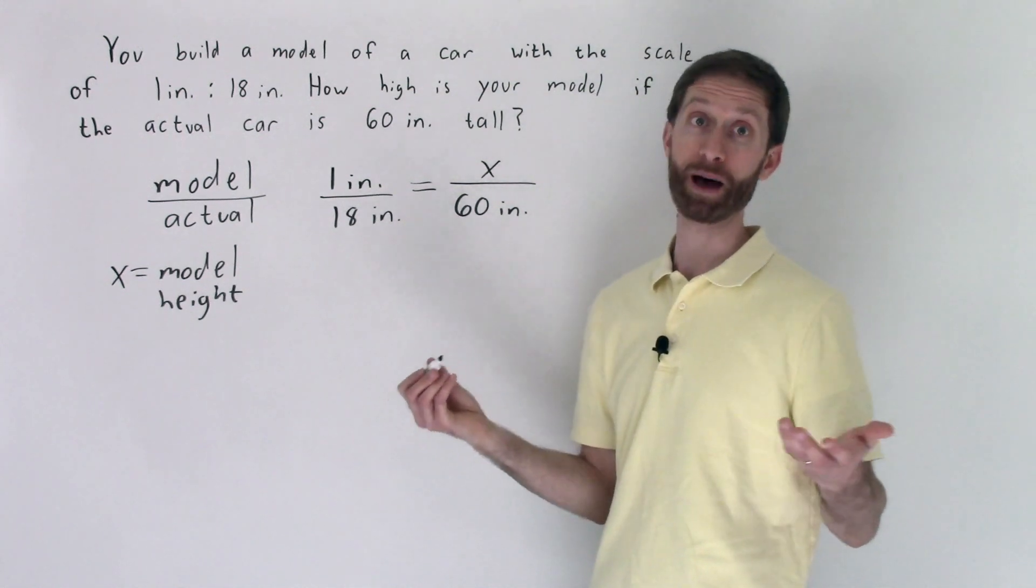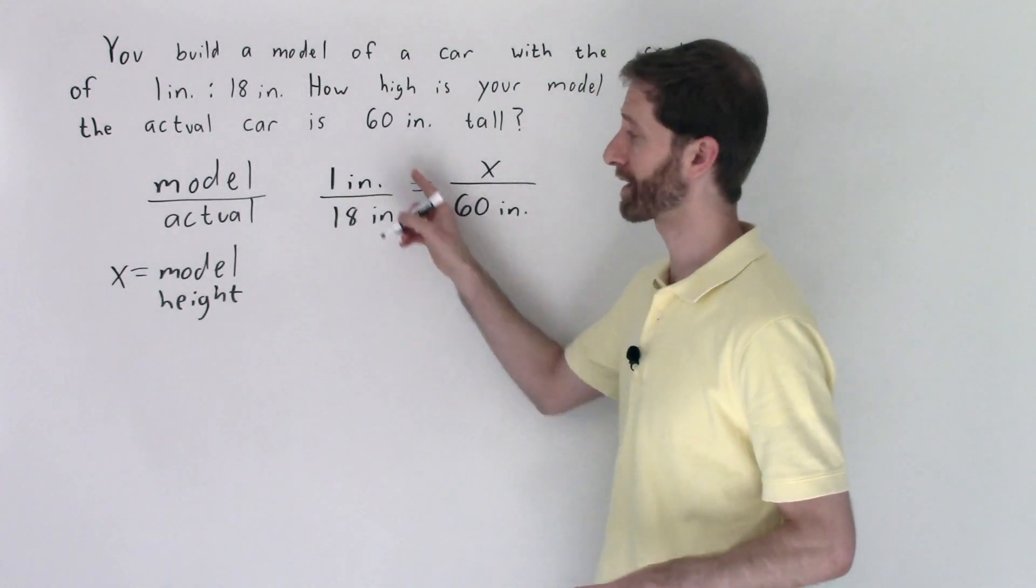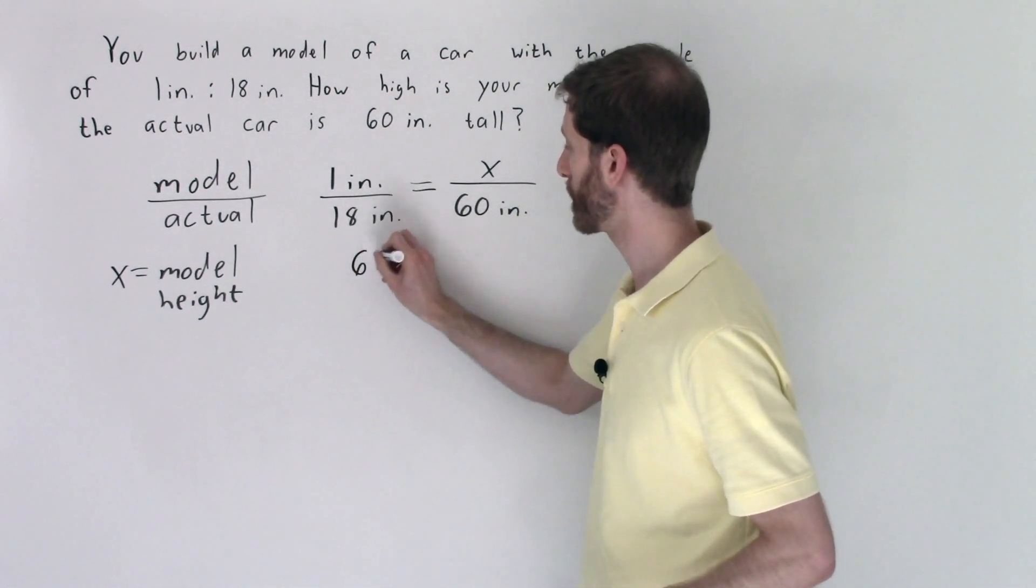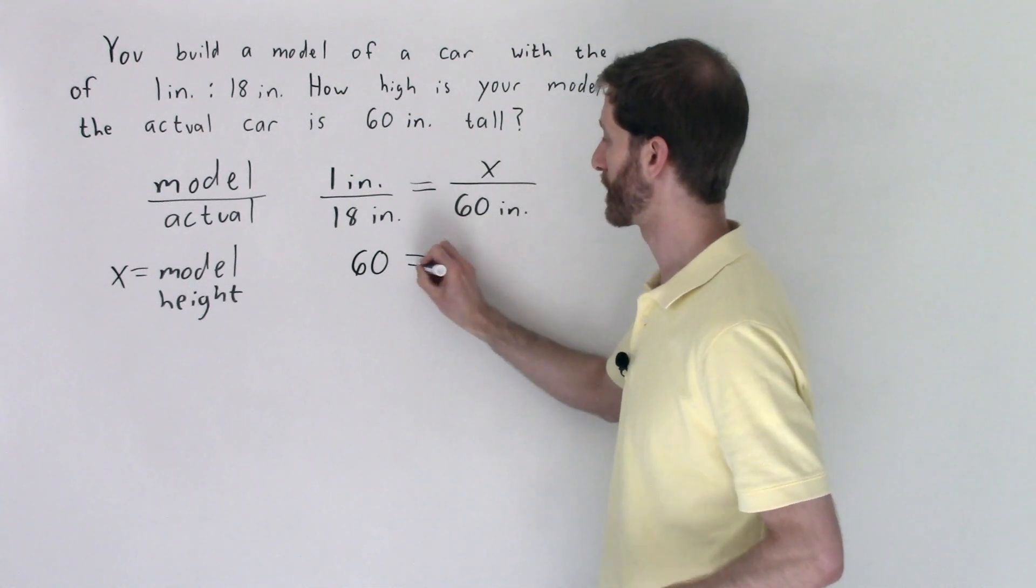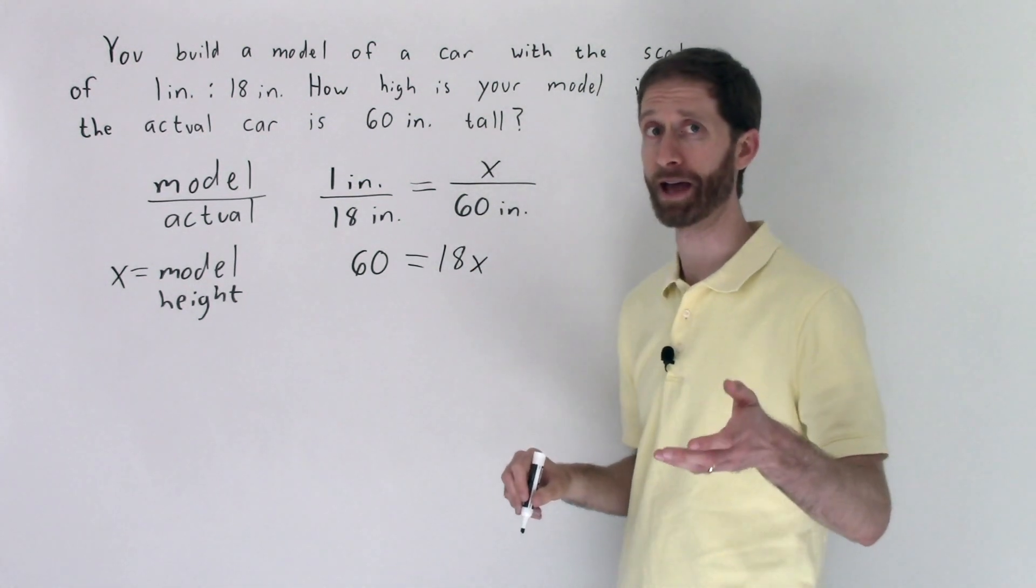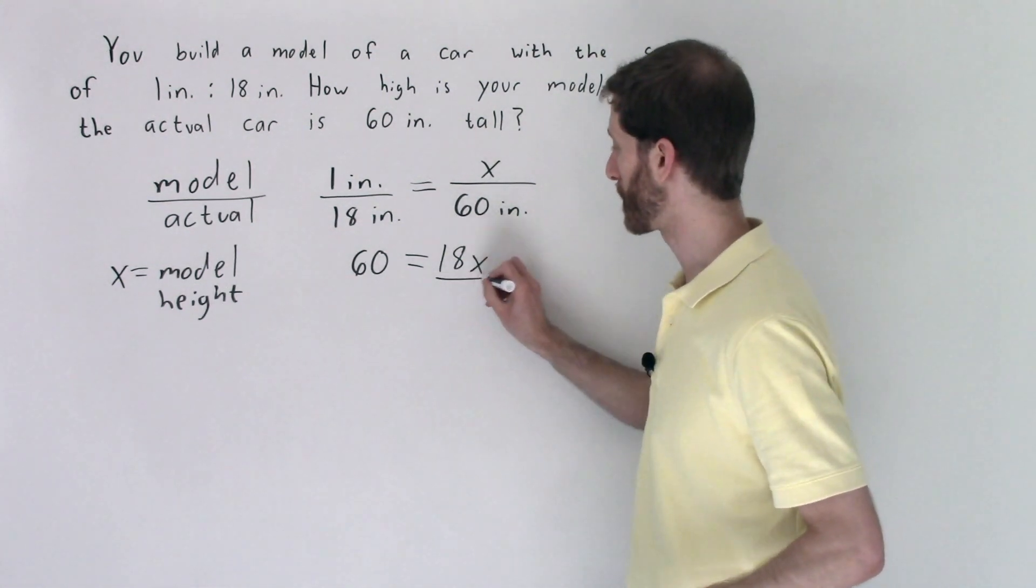We're going to cross multiply seeing that we cannot simplify this any further. 60 times 1 is 60, 18 times x is 18x. We're left with an equation that we've solved many a time. Now we're going to undo multiplication of 18 by x by dividing by 18, and of course we've got to do that on both sides.